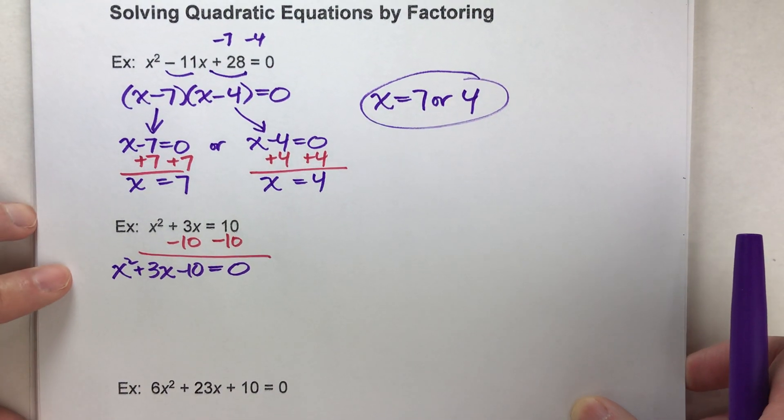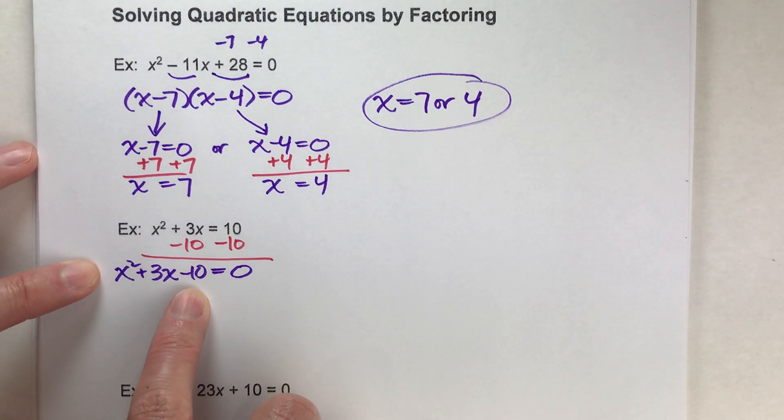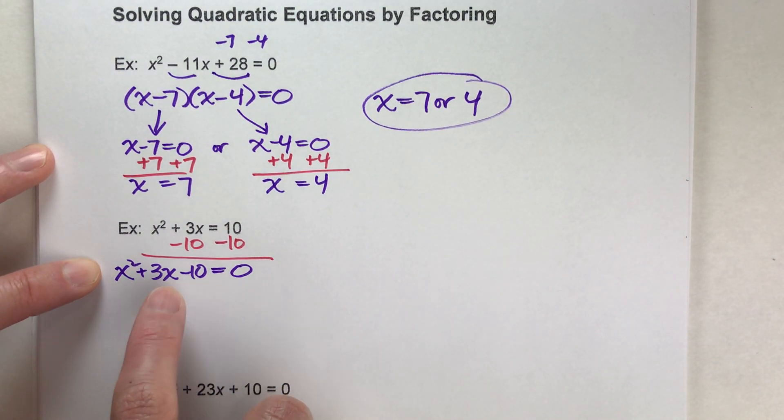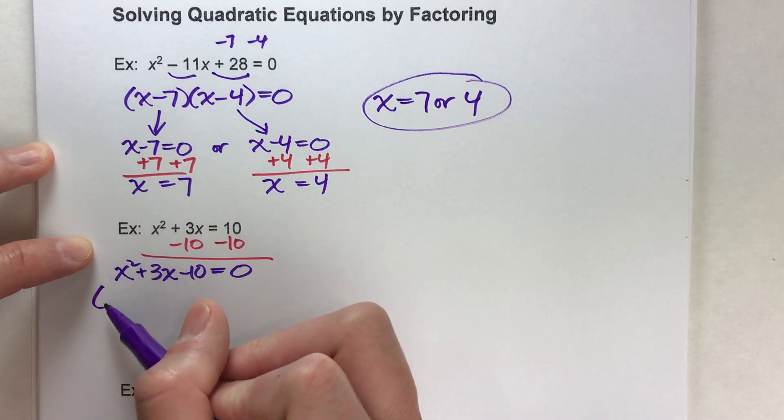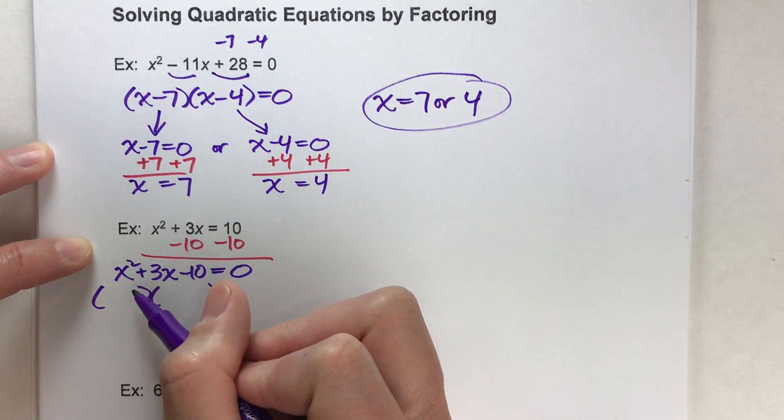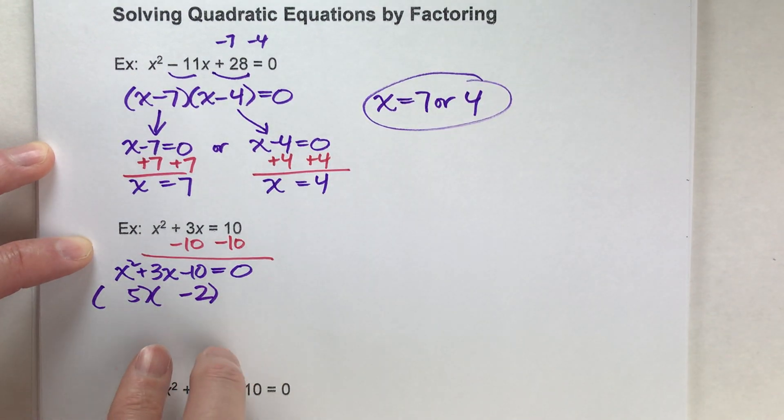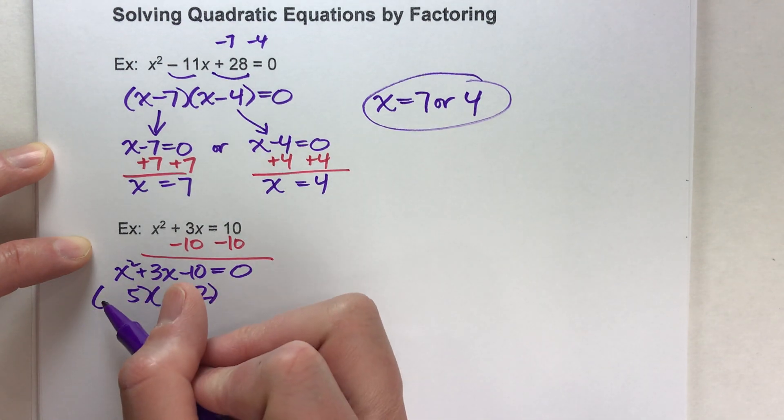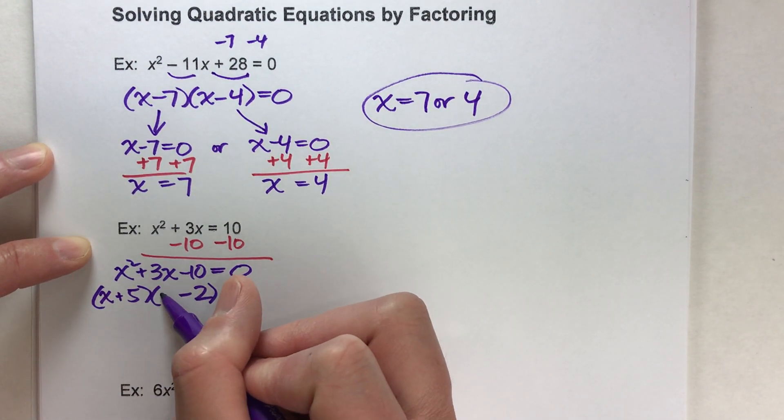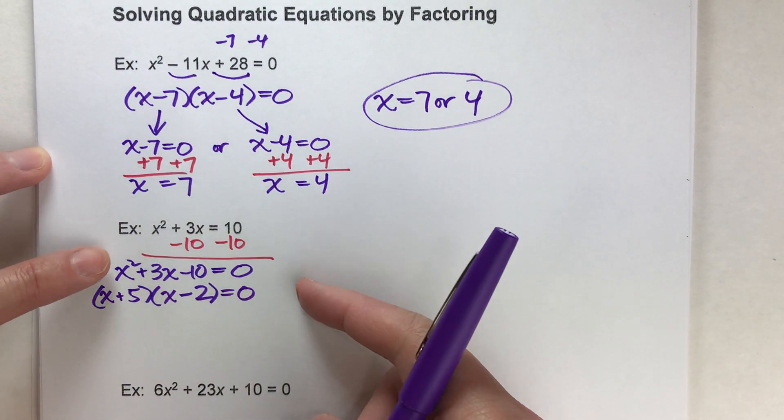Now let's factor this thing. What two numbers multiply to get negative 10 but add to get positive 3? Well if you think about it, it's got to be positive 5 and negative 2 because those two multiply to get negative 10 but they add up to get positive 3. So here is our factored form of the equation.